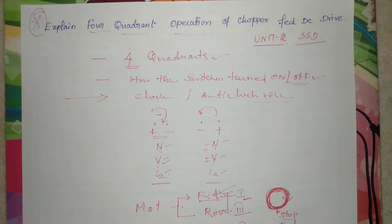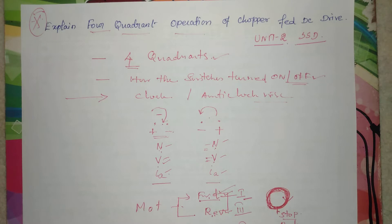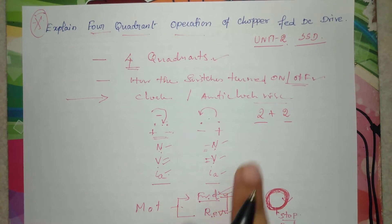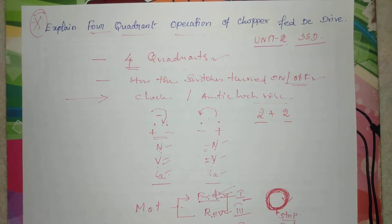In four quadrant operations, we need to consider two different areas. First, what are the four quadrants, and second, how the switches are turned on and turned off. We must know the sequence of switches for all four quadrants, and how we can classify them into two plus two quadrant operations. The major two quadrants are motoring operation and braking operation.